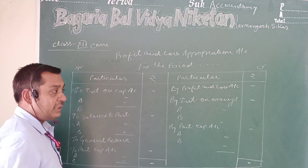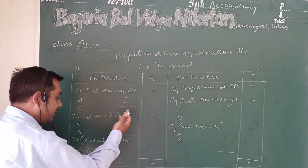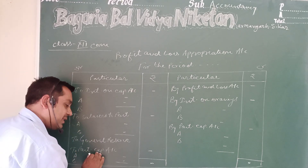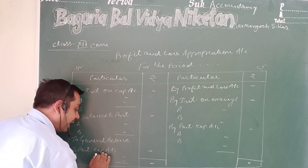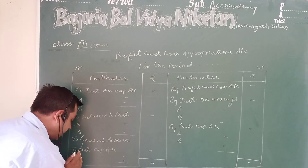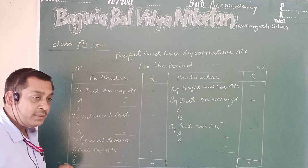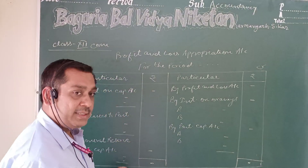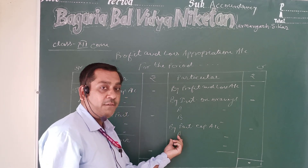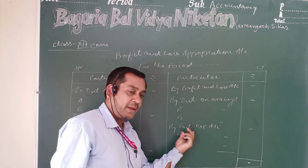If the total of the credit side exceeds the total of the debit side, then the divisible profit is distributed among partners and transferred to the partners' capital accounts, shown separately for individual partners. But if the total of the debit side exceeds the total of the credit side, then the loss of the business is transferred to the partners' capital accounts.